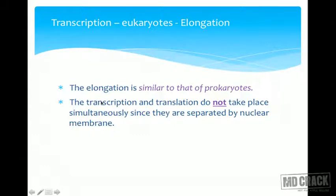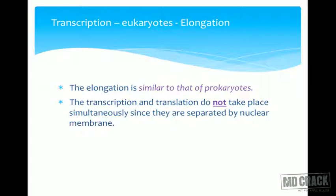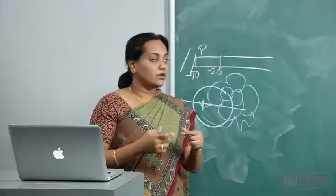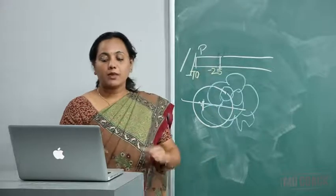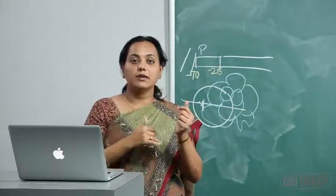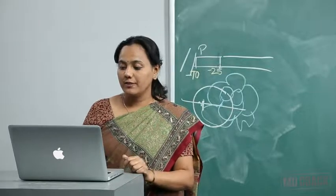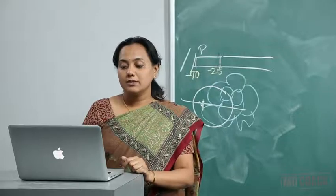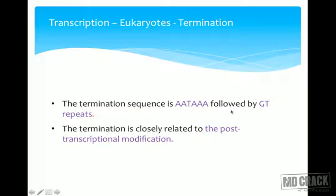The elongation in eukaryotes is similar to that of prokaryotes, but in prokaryotes transcription and translation can occur simultaneously — as the RNA transcript comes out, ribosomes can bind and start synthesizing protein. In eukaryotes this does not happen because the RNA must come to the cytosol and there is a clear nuclear membrane. In eukaryotic termination, there is a termination sequence called AATAAA followed by GT repeats, and termination is closely related to post-transcriptional modification.